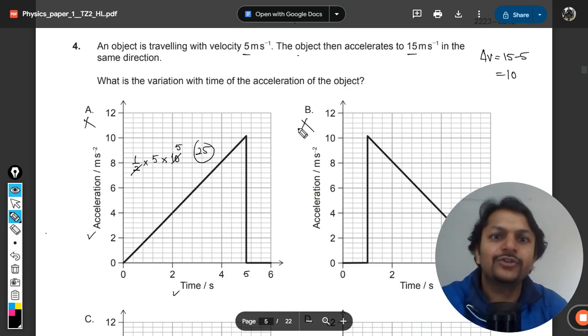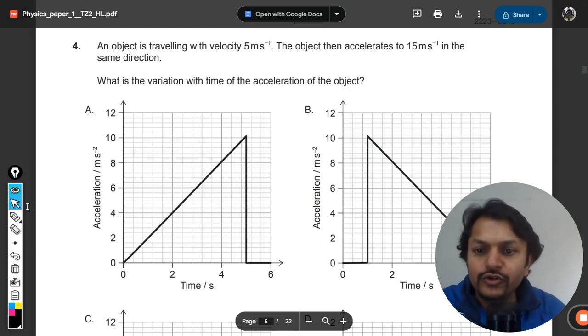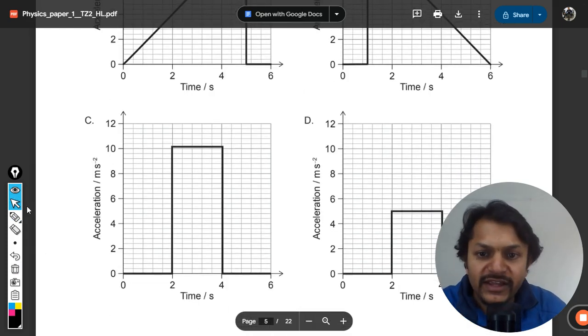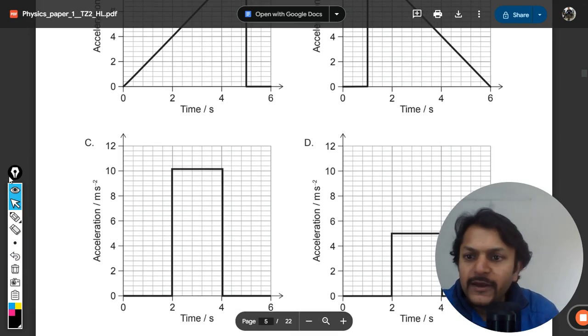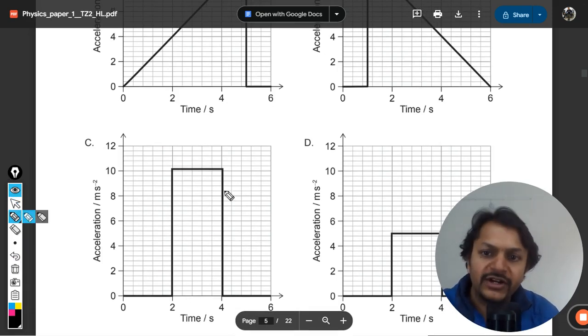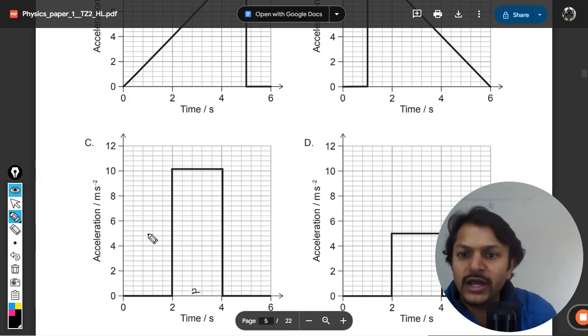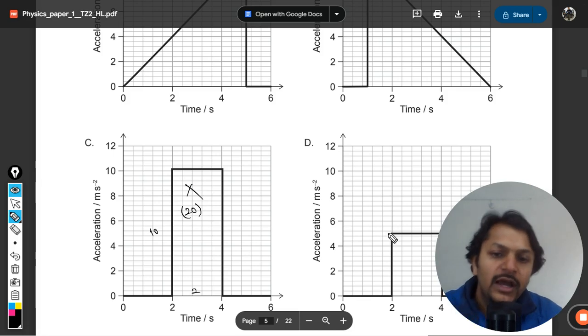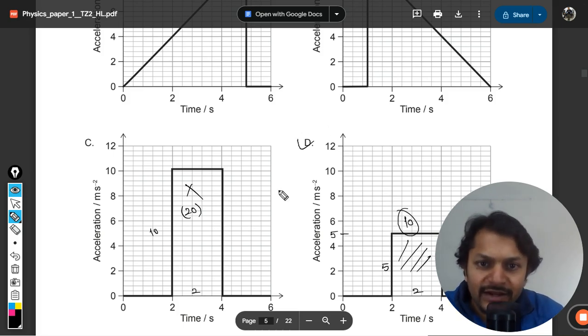Clear. Let us now move to C and D and find the areas. So in the case of C, this is a rectangle. The area is like length into base. This is 2, 4 minus 2 is 2, and this is 10. So area here is 20. Even this is wrong. And this is 2 and this is 5 value here, so 5 times 2 is 10. So D is the correct answer.